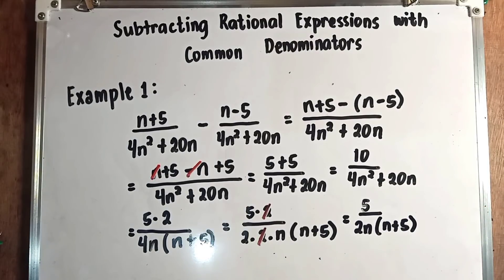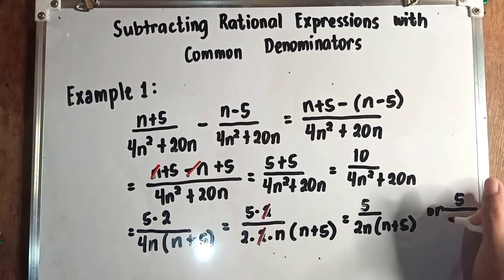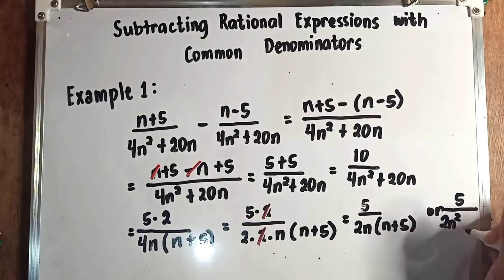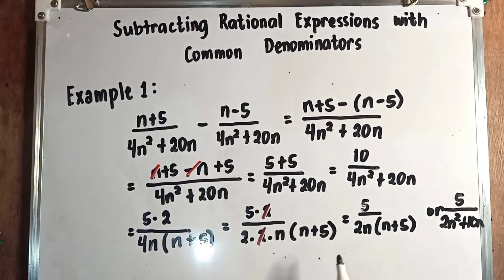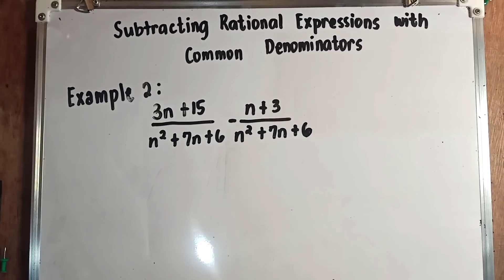You can write the final answer as 5 over 2n times (n plus 5), or equivalently as 5 over 2n squared plus 10n — both are acceptable final answers.